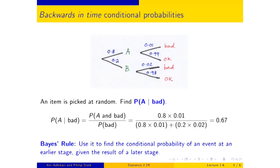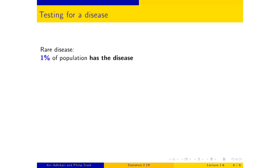I'd like to use Bayes' rule in one more context, which is a little less silly than widgets, and look at where we need to be careful. This is the situation where you're testing for a disease. I'm imagining a rare disease — 1% of the population has it. There's a test for this disease, and the test result is either plus or minus. Tests are not free of error — tests mess up.